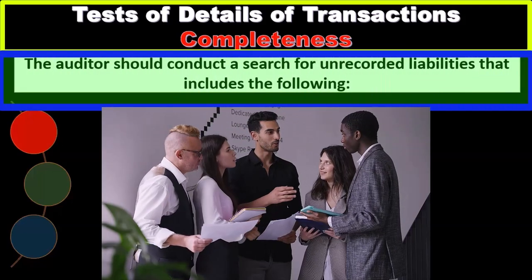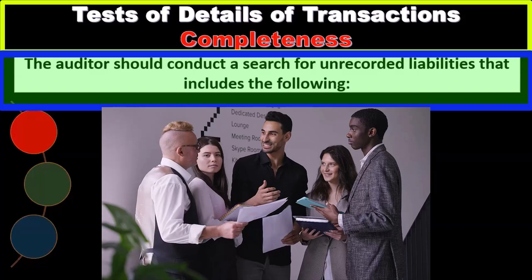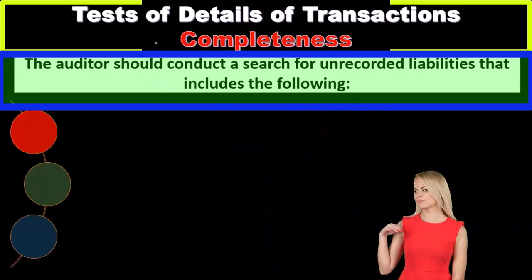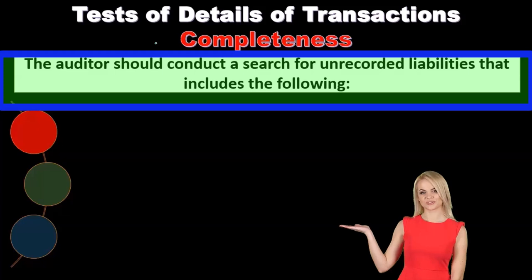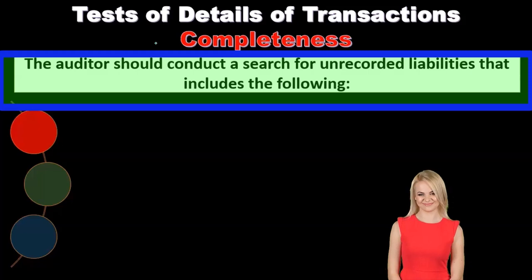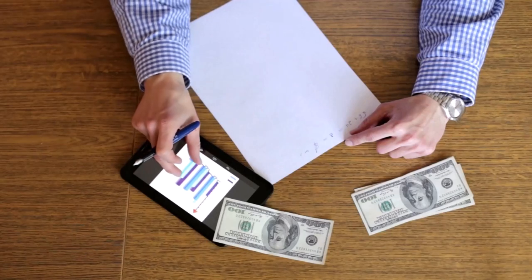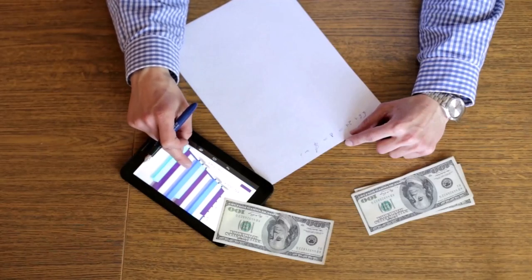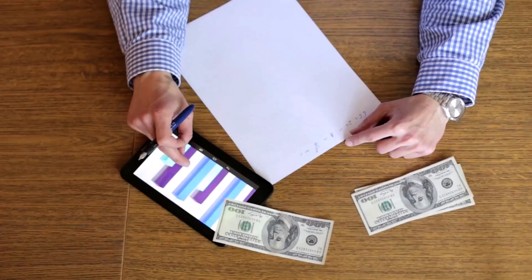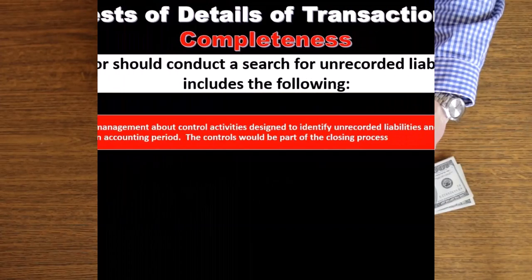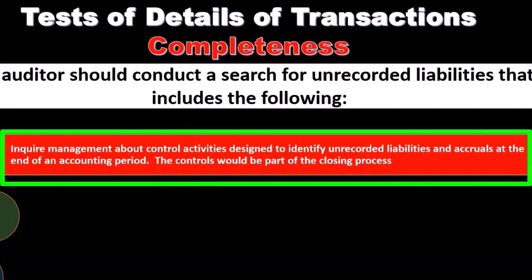The auditor should conduct a search of unrecorded liabilities. Completeness is the assertion that we want to make sure that everything that should have been recorded is recorded — are all transactions reflected in the financial statements? To test for this, we inquire management about control activities designed to identify unrecorded liabilities and accruals at the end of the accounting period. These controls would be part of the closing process.